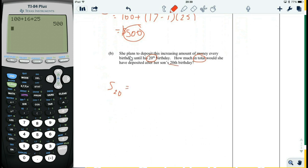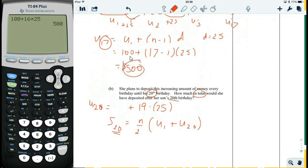So to find S20, we need to know a few numbers. N is obviously 20. U1 is the same as it was upstairs, which is 100. We just don't know U20 yet. So let's figure out U20 really quick. U20 equals U1 plus n minus 1, which is 19, times d, which is 25. U1 we know is 100. So 100 plus 19 times 25, which equals 575. So U20 is 575.